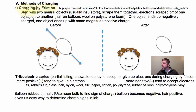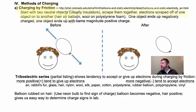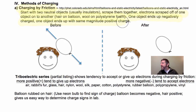When you do this, you start with two neutral objects, and it works best with insulators. You scrape them together, and electrons are scraped off one object and onto another. For example, hair on a balloon, wool on foam — one object ends up negatively charged, the other ends up with the same positive charge, same magnitude.